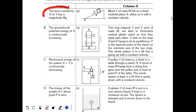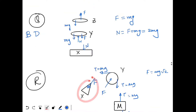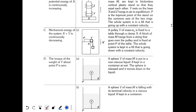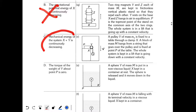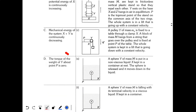For R — option A: force exerted by X on Y is Mg√2, not Mg — incorrect. Option B: gravitational PE of X is continuously increasing — but X (clamp) is going downwards in the lift so its gravitational PE decreases — incorrect. Option C: mechanical energy of system X+Y is continuously decreasing — since everything moves downward, energy decreases — C is correct. Option D: torque of weight of Y about point P — M₀g acts at a distance from P, so torque is non-zero — incorrect. For R: C is correct.